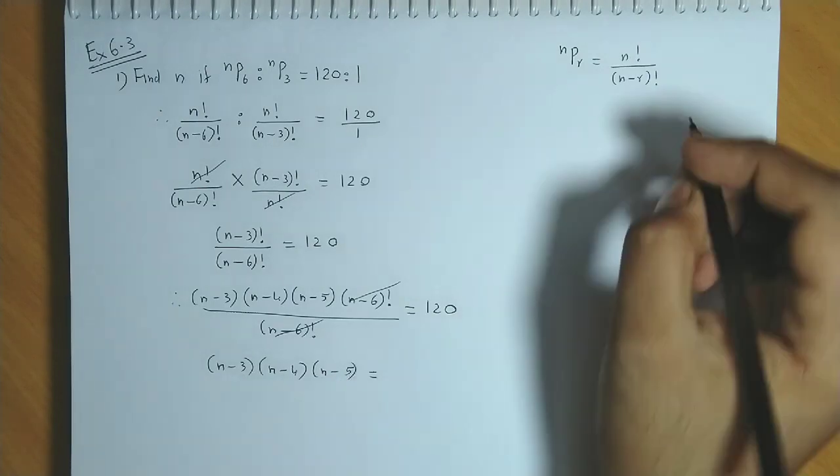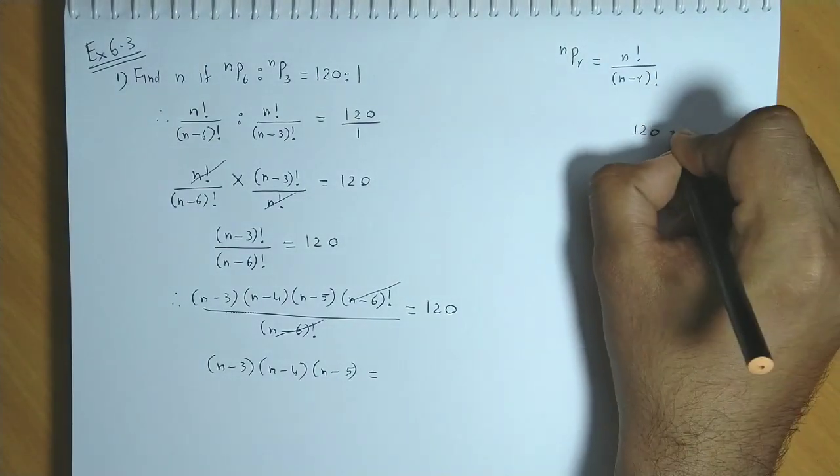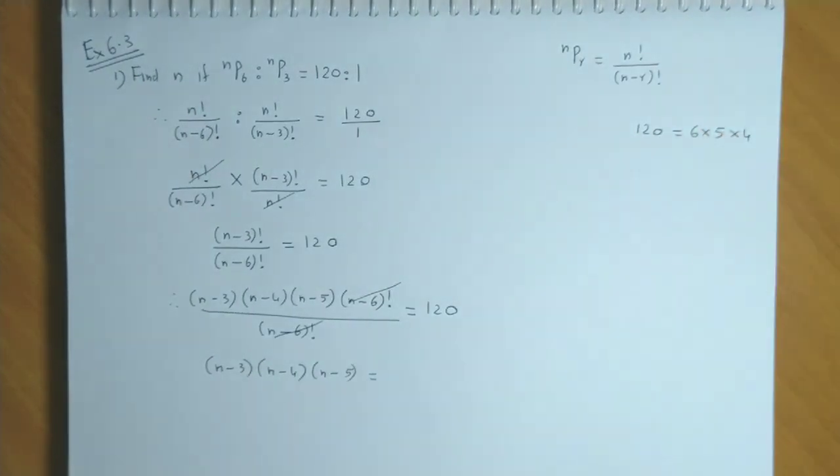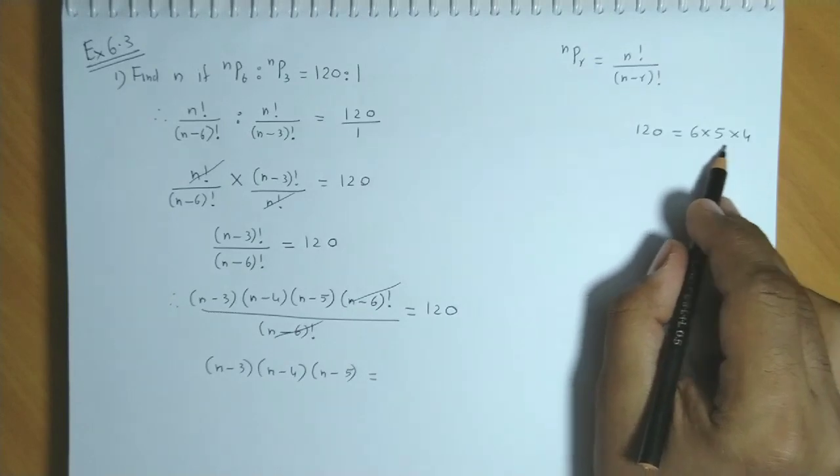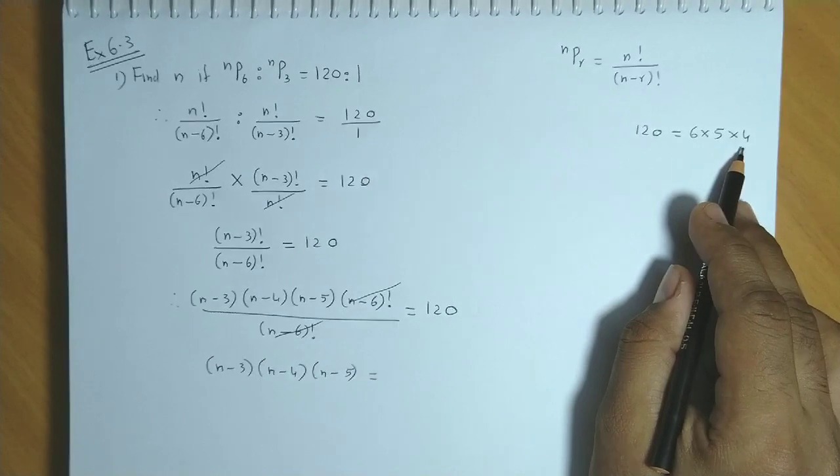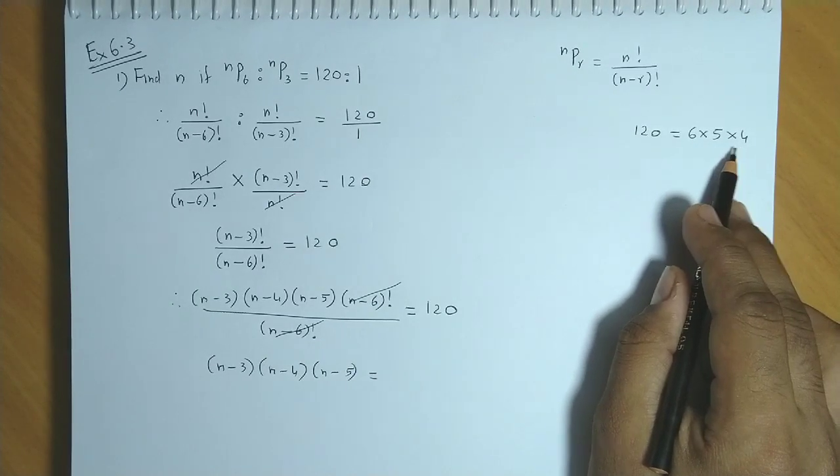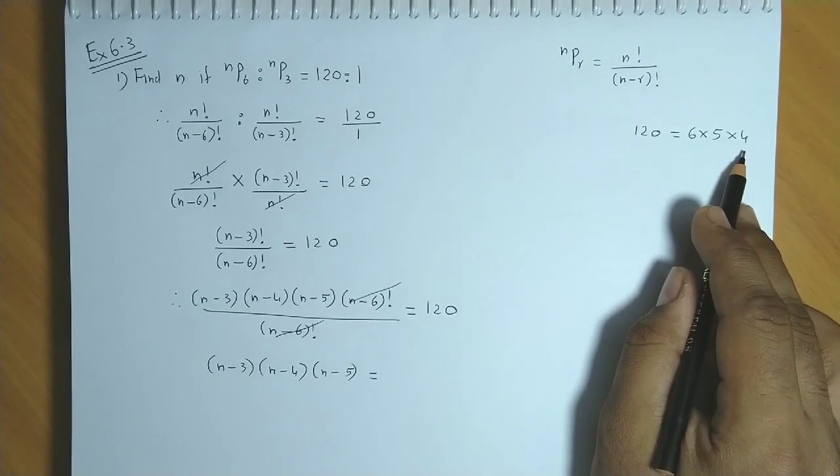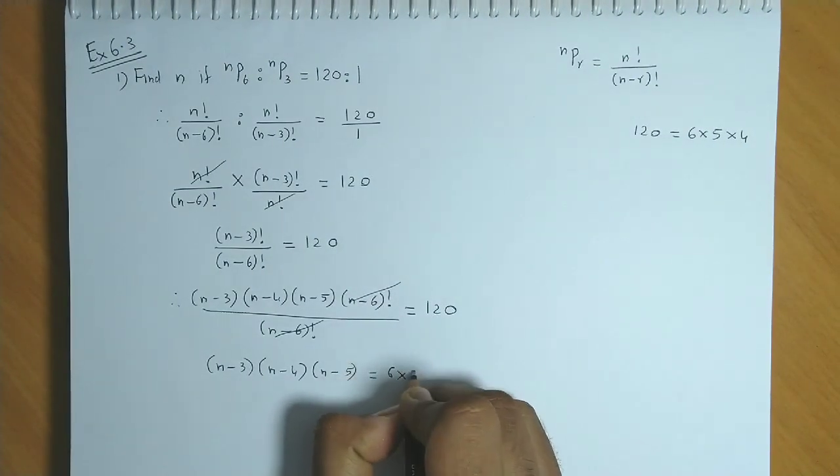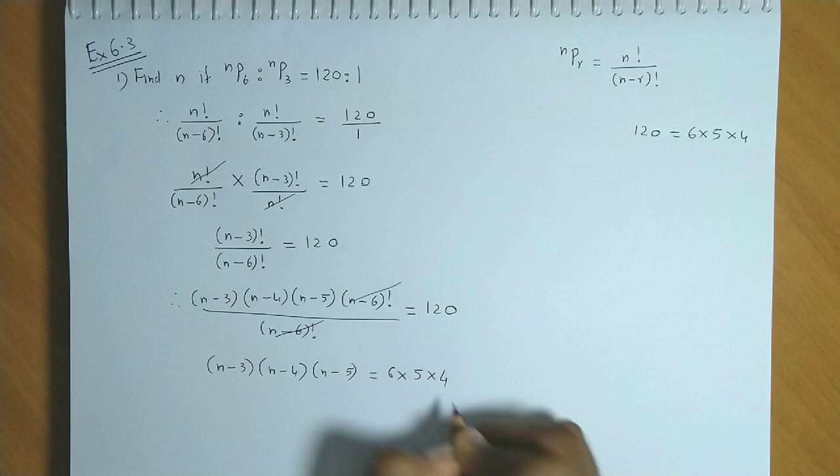120 can also be factorized as 6 into 5 into 4. Here also there is a difference of 1, and there are also 3 factors. So this 120 could be replaced by 6 into 5 into 4.